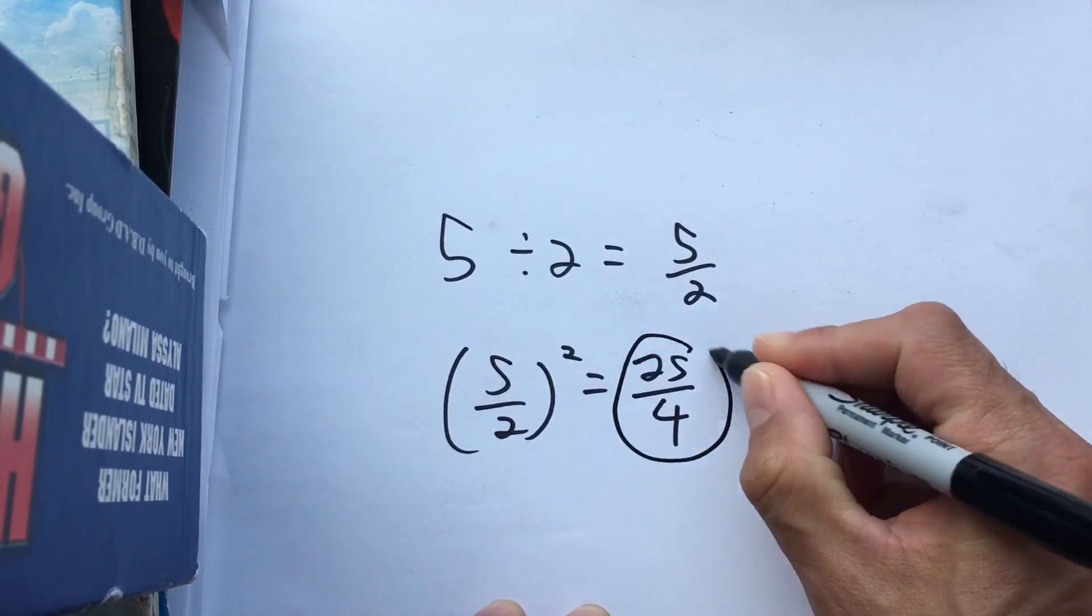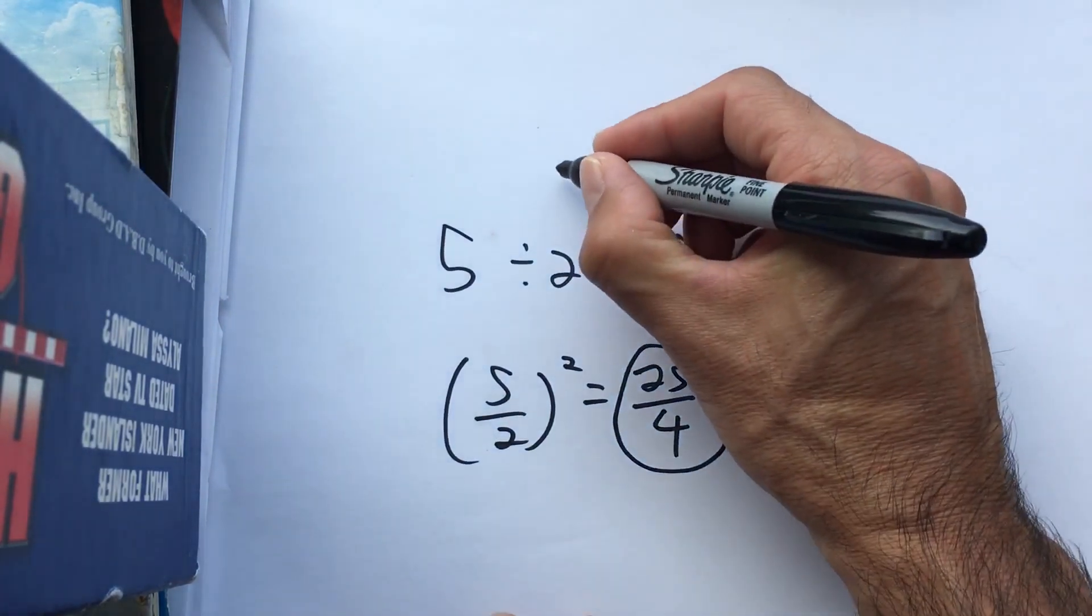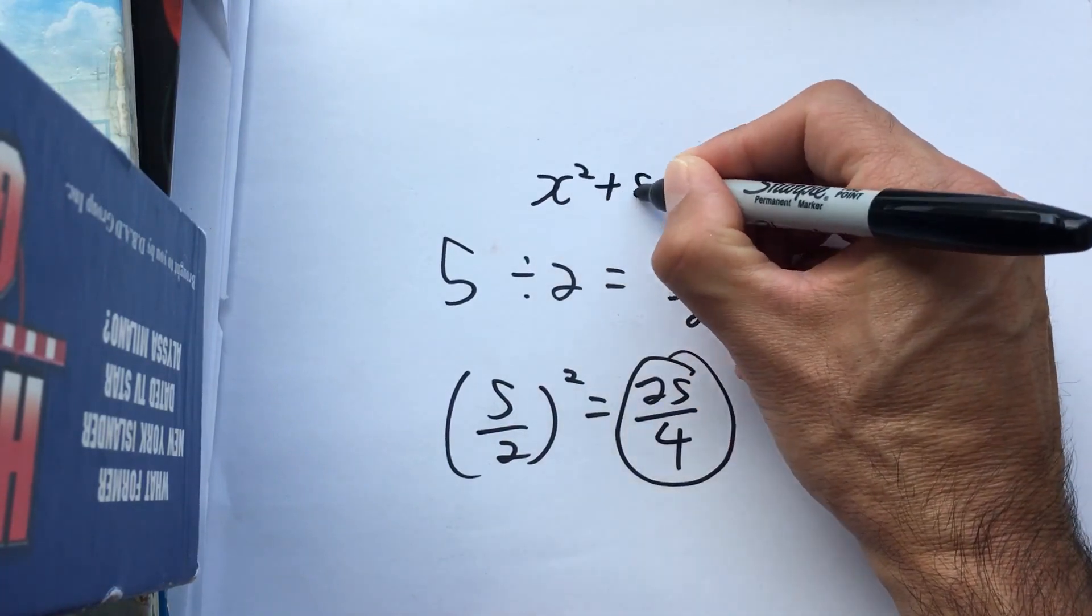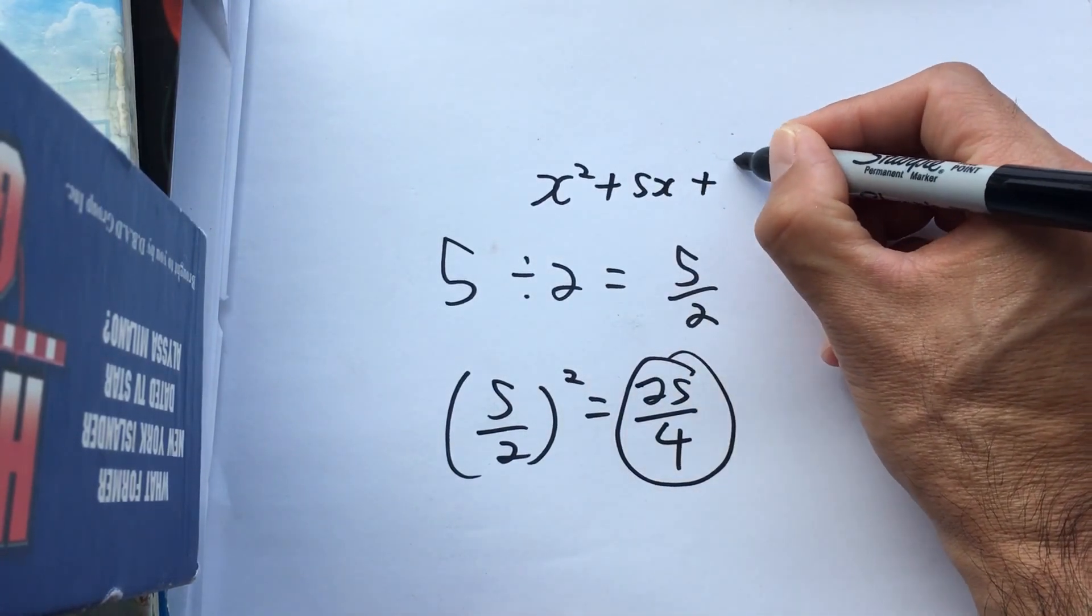So 25 over 4 is the number that I must add to x² + 5x to make a perfect square.